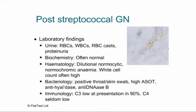Laboratory findings: the urine is active with red cells, white cells, red cell casts, and mild proteinuria. Biochemistry is often normal, although some individuals will have an elevated potassium and elevated creatinine. Haematologically, the pallor relates to a dilutional normochromic normocytic anaemia, and the white cell count is sometimes high.